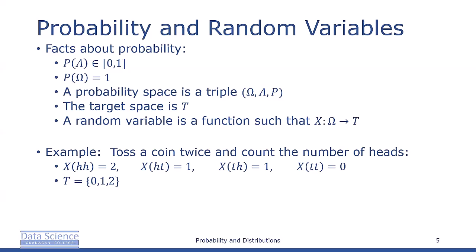For a sample space omega and a finite target space t, the function corresponding to a random variable is essentially a lookup table.